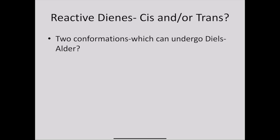Looking at dienes in particular, we know that there are two different conformations of dienes. You have trans dienes and you have cis dienes. With these two conformations, which can undergo Diels-Alder?